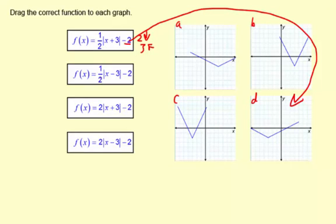This next one is the same vertical shrink by a factor of 2, and it's 3 to the right and 2 down. So that would be this first one here.